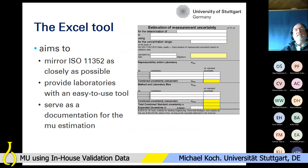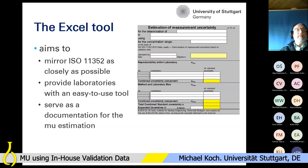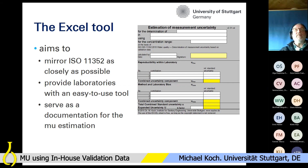The Excel tool consists of several sheets. As I said, it aims to mirror the ISO standard and provides laboratories with an easy-to-use tool. It can also be used as documentation for the measurement uncertainty estimation — to show to auditors in the accreditation process. Therefore, we also have a signature field so at the end you may print it and sign it.